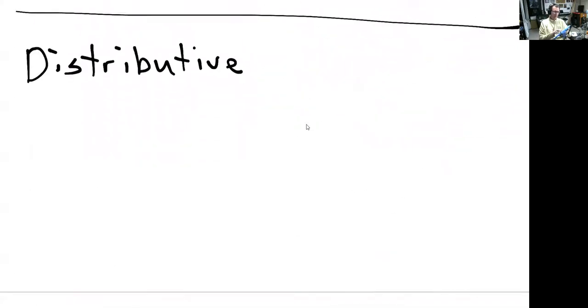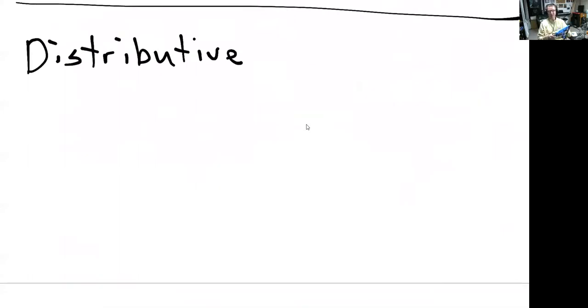The next and last property and the last topic for this video: the next one is the distributive property for real numbers. Now this one brings in a little bit of multiplication. So just real briefly, multiplication of any two real numbers...